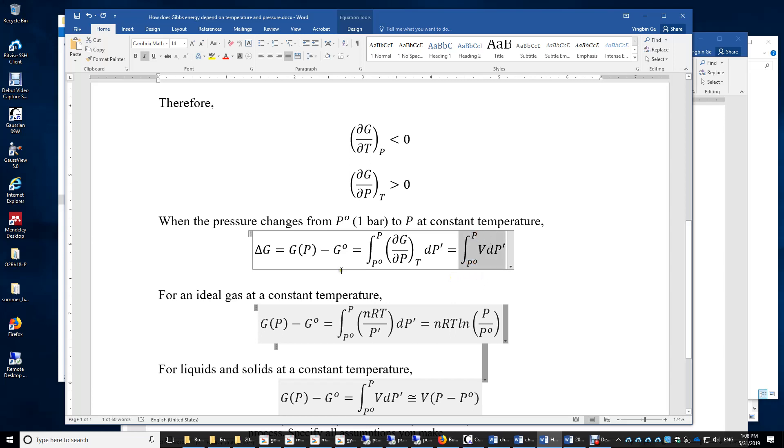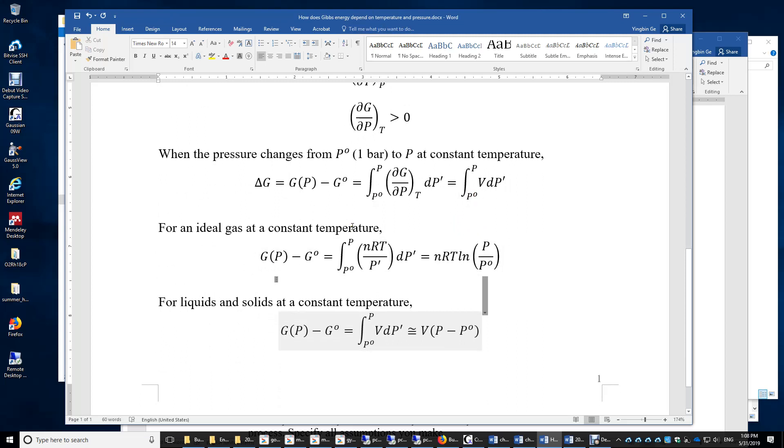And this tells you how much Gibbs energy changes when the pressure changes from the standard one bar to the final pressure P. For an ideal gas at a constant temperature, this is very easy because volume equals nRT over P. For an ideal gas, we simply just need to integrate this, and we get the change of the Gibbs energy is equal to nRT times the natural logarithm of P over one bar.